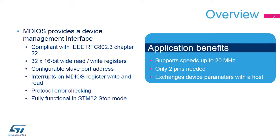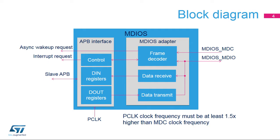The communication speed can go as high as 20 MHz. The MDIOS controller provides all the functions specified in IEEE RFC802.3 Chapter 22 needed to interface with a host. It consists of an MDIOS adapter and an Advanced Peripheral Bus, or APB, interface. The MDIOS adapter provides functions such as frame decoding and checking, asynchronous wake-up and interrupt generation, while the APB interface manages the control and status registers, data in-registers and data out-registers, and synchronous interrupt requests. Two clocks are available for the MDIOS controller: the APB clock, or PCLK, for the APB interface, and the MDIOS-MDC bus clock for the MDIOS adapter.